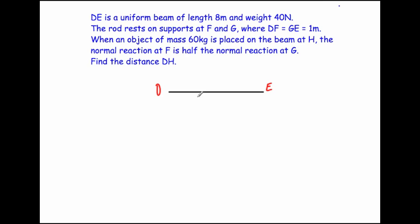I've got my beam DE here. Because this is a uniform beam, I'm going to put the weight in the middle. The length is 8 meters, so it's 4 meters from each endpoint to the middle. The rod rests on supports at F and G, where D to F is 1 meter and G to E is 1 meter. So the distance from the support F to the middle is 3 meters, and likewise 1 meter and 3 meters on the G side.